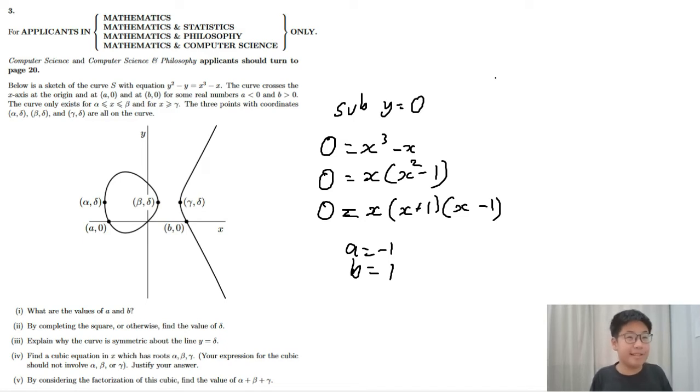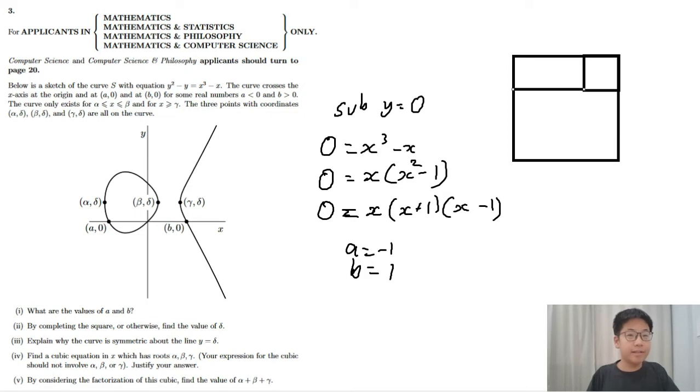You basically complete it by adding this extra bit left over. So let's draw a square and let's draw another smaller square up top.